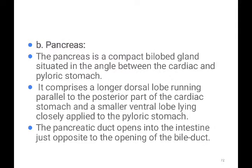The pancreas is a compact bilobed gland situated at the angle between the cardiac and pyloric stomach. It comprises a long dorsal lobe running parallel to the posterior part of the cardiac stomach, and a ventral lobe lying close to the pyloric stomach. The pancreatic duct opens into the intestine just opposite to the opening of the bile duct.